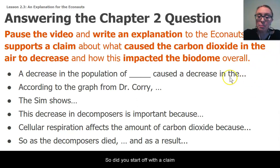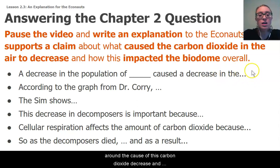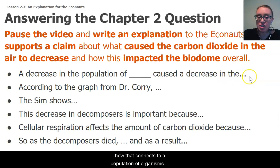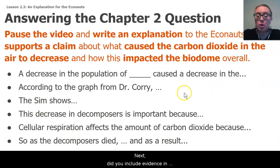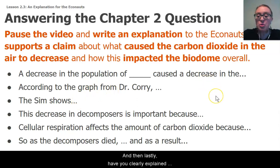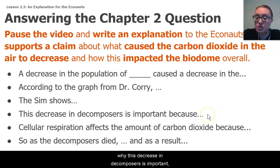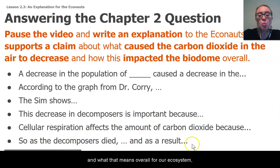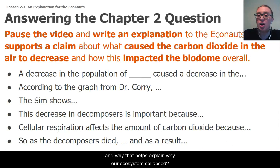Did you start off with a claim around the cause of this carbon dioxide decrease and how that connects to a population of organisms within the biodome? Next, did you include evidence from both Dr. Corey's graph as well as our sim investigation? And then lastly, have you clearly explained why this decrease in decomposers is important — how that connects to cellular respiration and carbon dioxide, what that means overall for our ecosystem, and how that helps explain why our ecosystem collapsed?